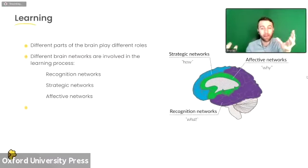Then we get to the frontal lobes, where information triggers a response or action. This is the strategic network — the "how": how do you learn, how do you process information, what do you do with it. I want to clarify that this does not imply a linear process; it's a model looking at three broad learning networks useful when we design learning experiences.